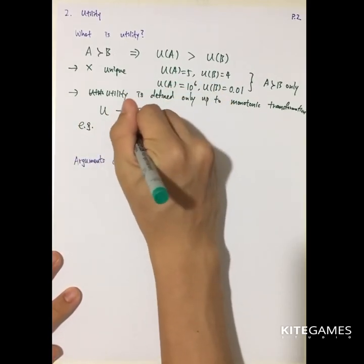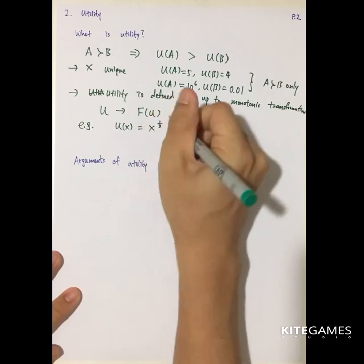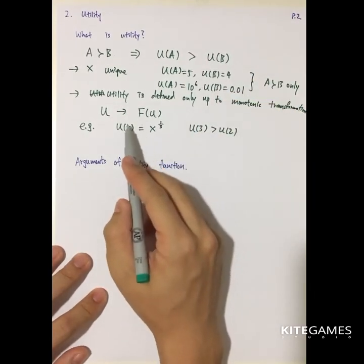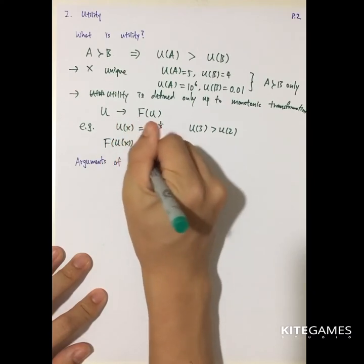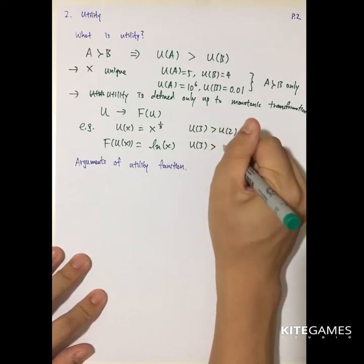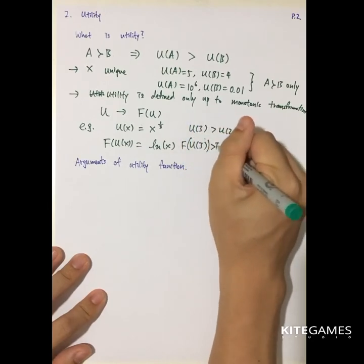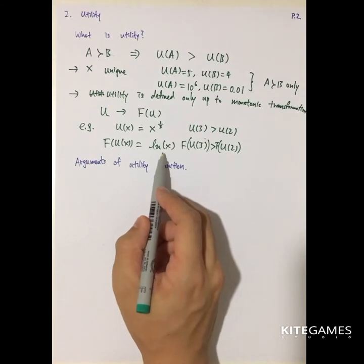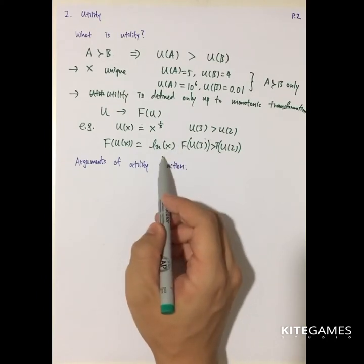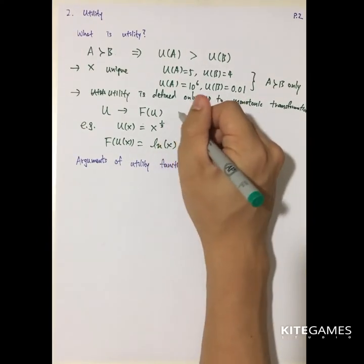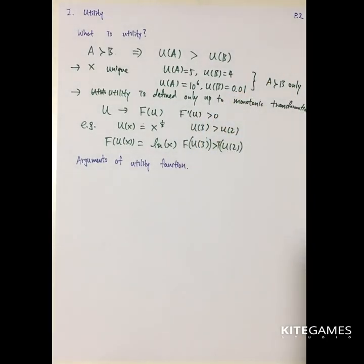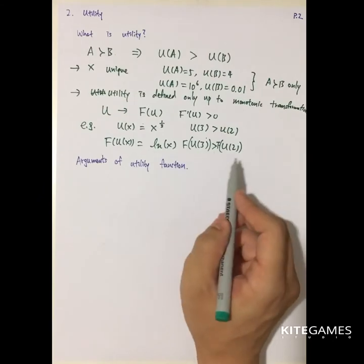Say I give you a utility function that depends on the value of X, where U3 is higher than U2. Then I apply a monotonic transformation by putting U into a log function. We can still say that log(U3) is higher than log(U2). So for different utility functions, as long as the transformation is monotonic — meaning the first derivative of F is positive, strictly increasing — the same bundle will always be preferred to the other bundle.